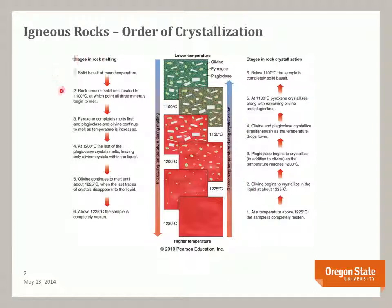Now if we reverse the process — we have a solid basalt at room temperature and we heat it up to 1100 degrees — the first mineral to melt is pyroxene, then plagioclase, and olivine continues to melt as the temperature increases. Finally olivine melts, with the last traces at about 1225 degrees, and then the sample is completely molten at 1225 degrees.